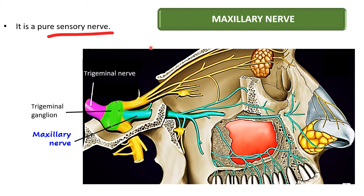It is only the mandibular nerve which is a mixed nerve, supplying the muscles derived from the first pharyngeal arch. Again, the maxillary nerve is a pure sensory nerve — it will carry only general sensations from the skin and the mucous membrane of certain areas of the head region.